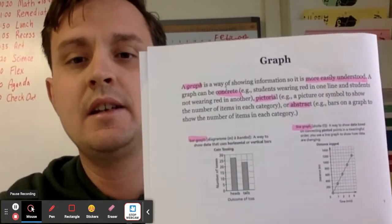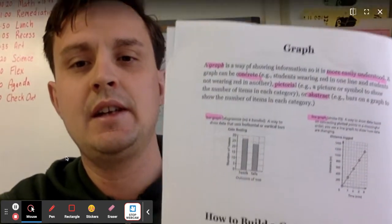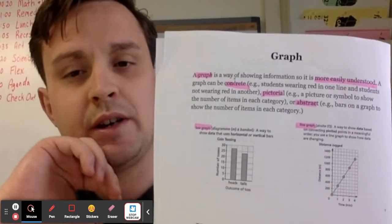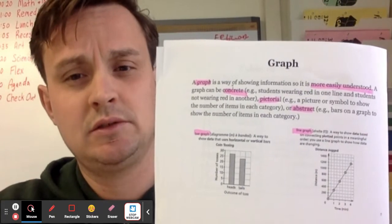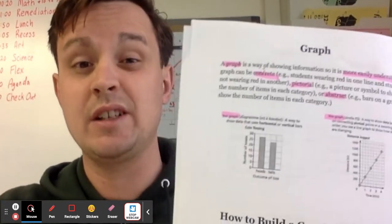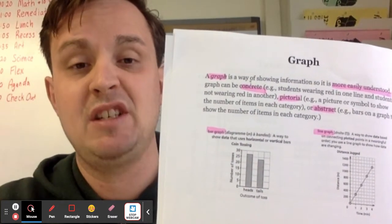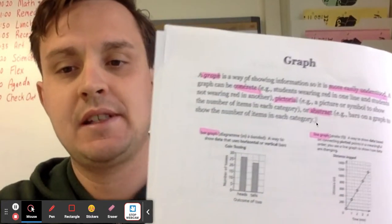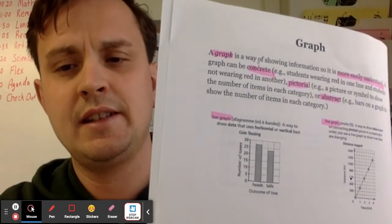Here's an example of what highlighted notes might look like. I highlighted 'graph' as the topic, and that graphs exist so information can more easily be understood. I put a question mark beside 'concrete' — all it means is real, as in the real world, whereas abstract is a representation or idea. So concrete graphs use real students in lines, pictorial graphs use pictures, and abstract graphs use bars or lines. I also made a connection wondering whether 300 meters per minute jogging is actually quite fast.